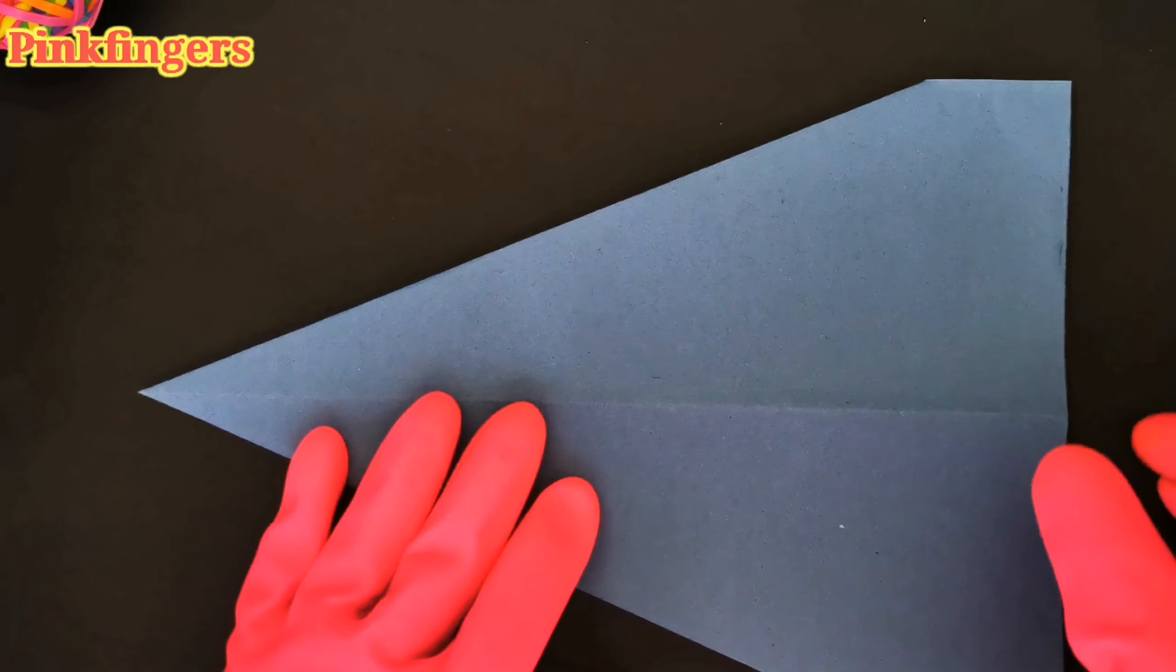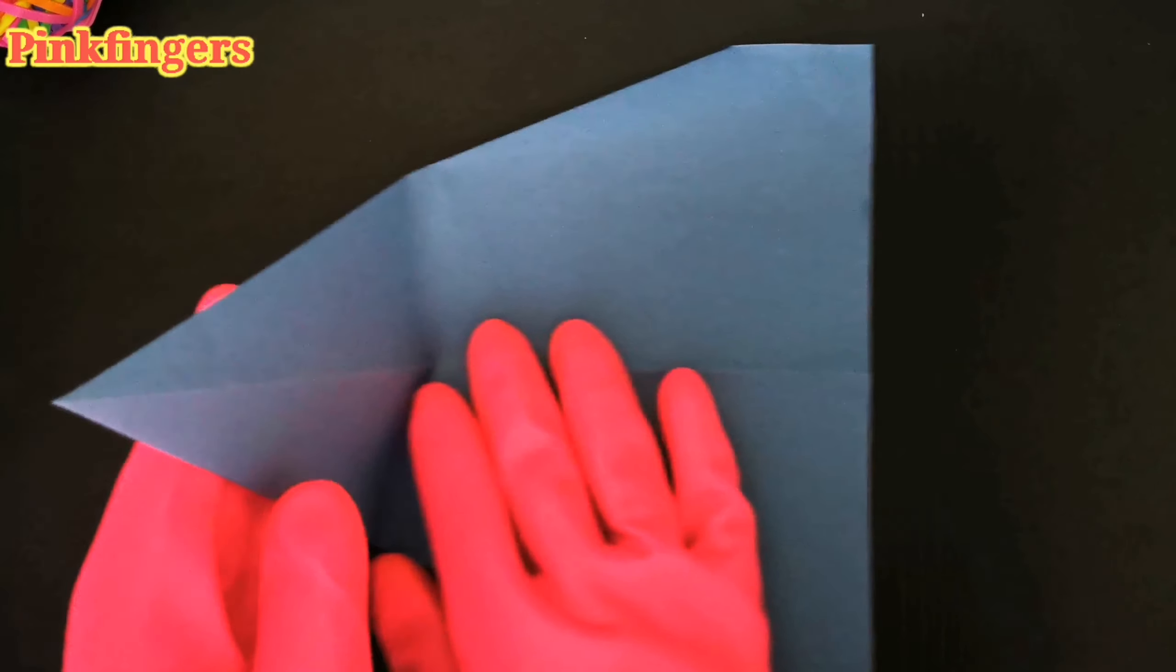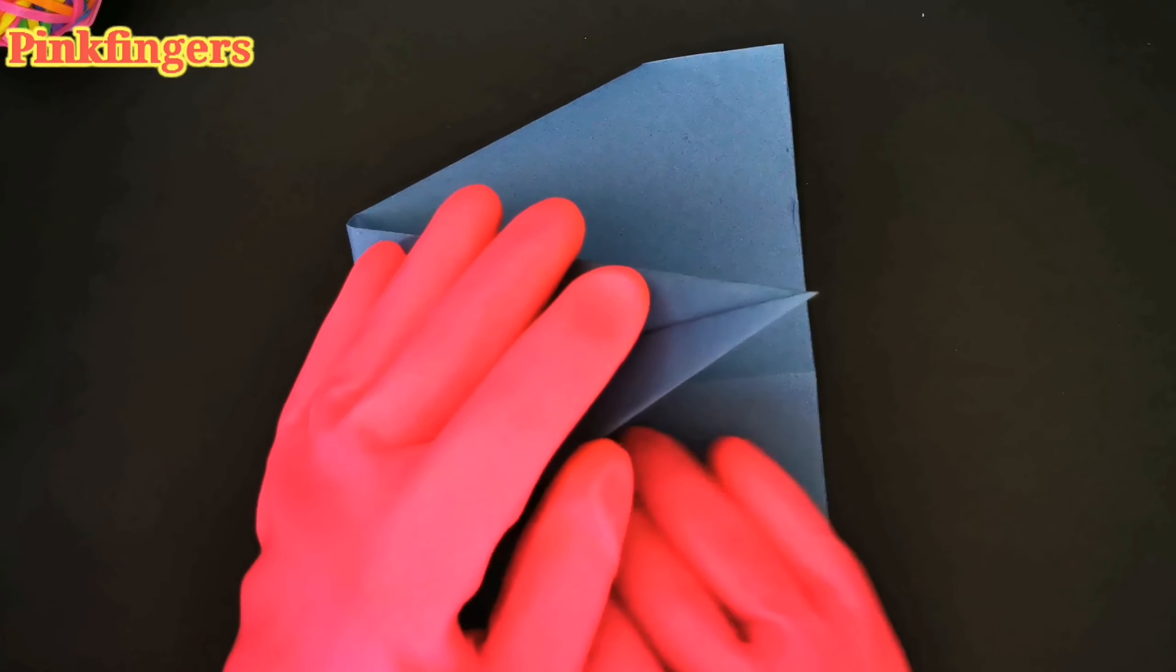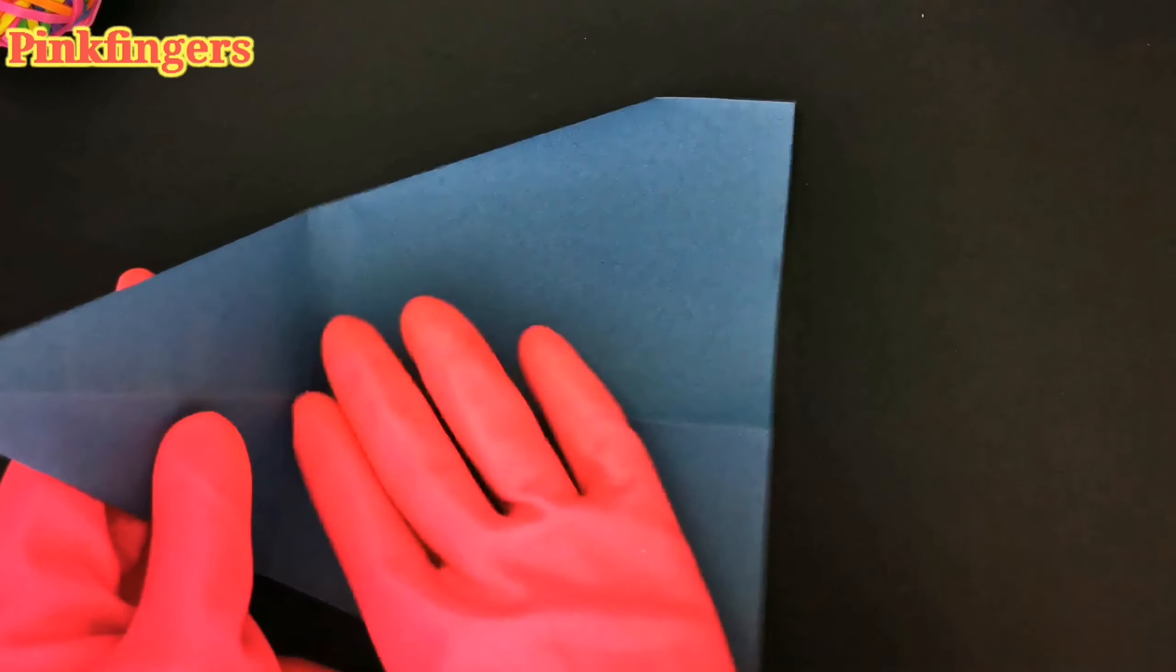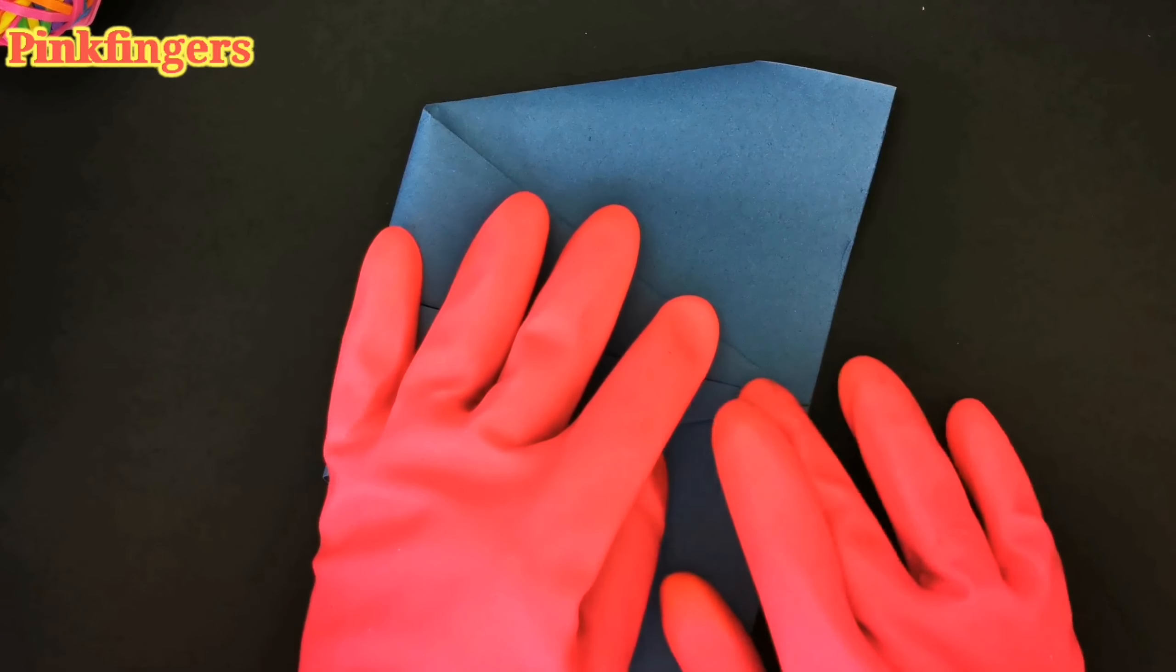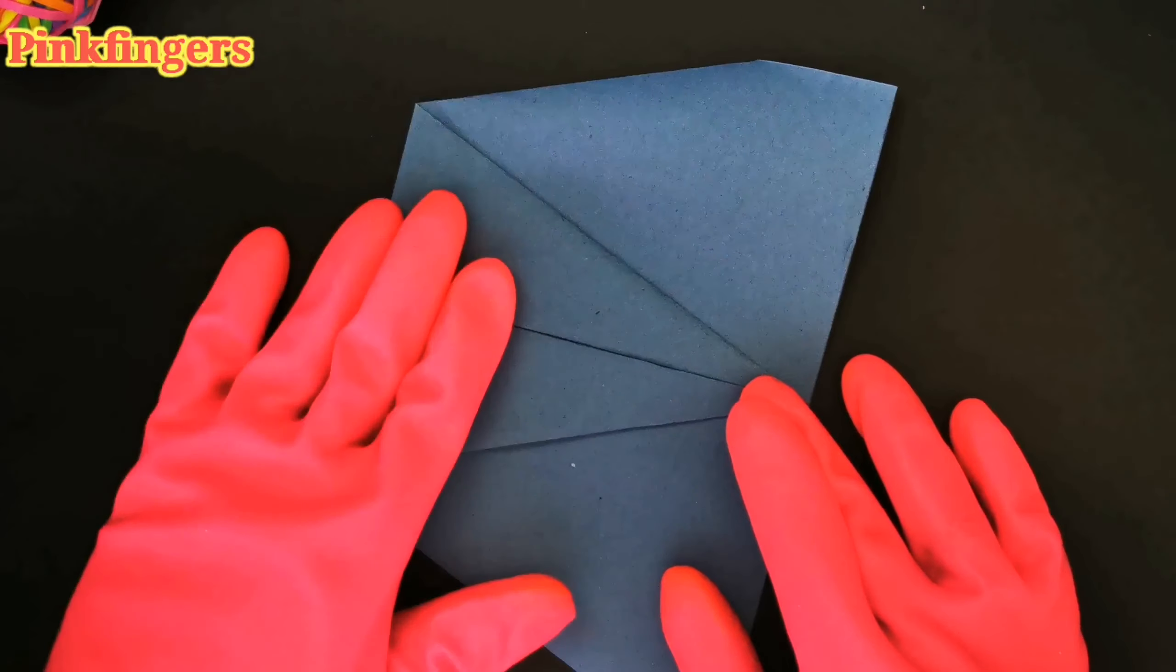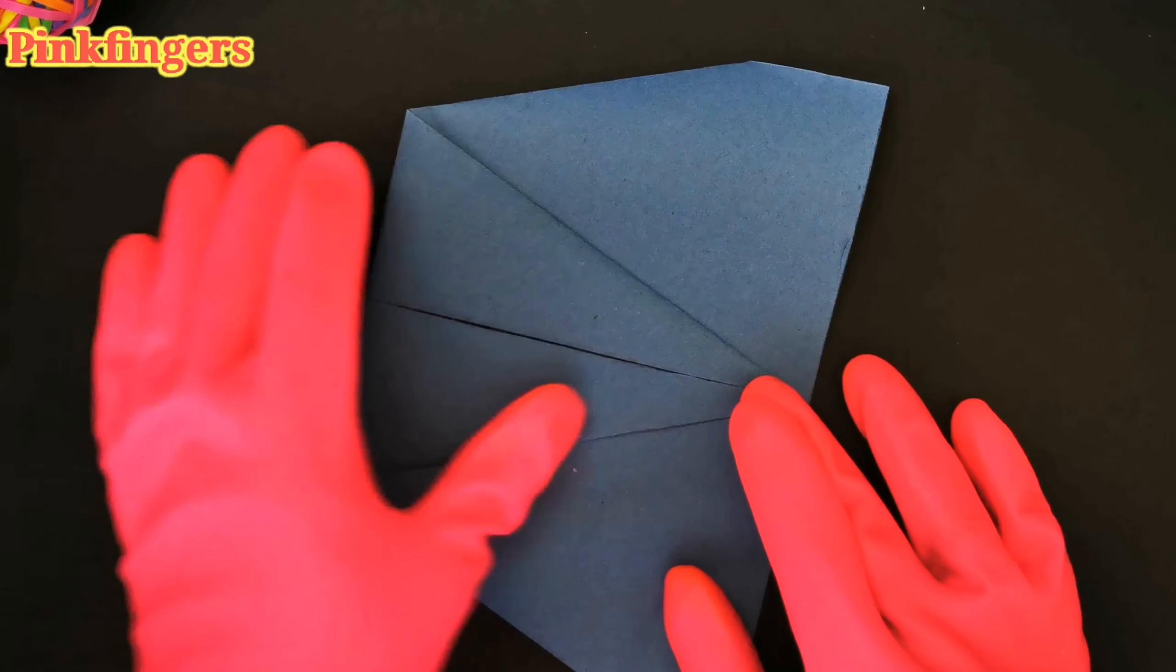Flip it over to the other side. Then we bring the tip of the triangle and we're going to try to touch the bottom edge of the paper. Make sure it's lined up correctly and use that as a reference point. Once you're happy, press down to the edge.